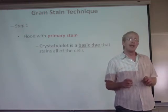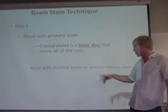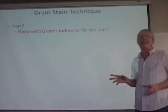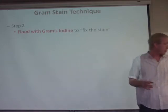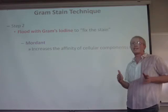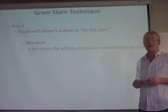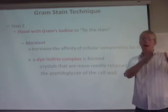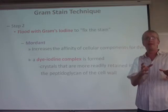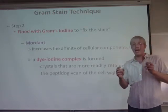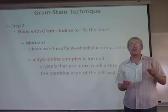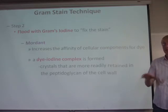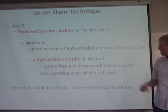We let the crystal violet react for a minute, then rinse with distilled water and proceed to step two. Step two involves Gram's iodine, which fixes the dye and is referred to as a mordant. A mordant is a substance that increases the affinity of the dye for the cellular components by forming a dye-iodine complex. The iodine binds to the dye, and it becomes trapped in the peptidoglycan cell wall, making it much harder to wash out of the cell, especially in gram positive bacteria.